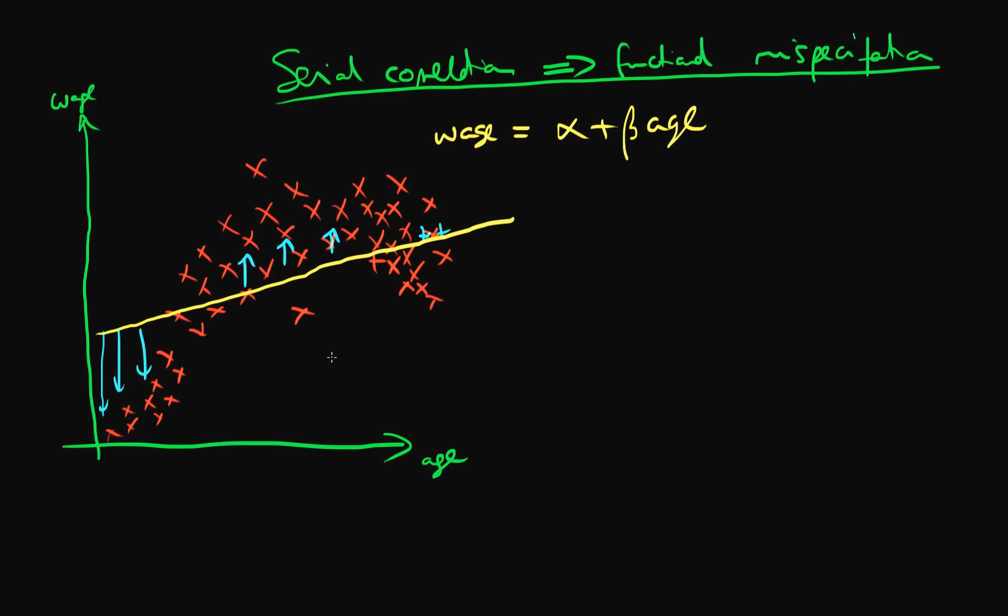So note this is evidence of serial correlation because if I have a given positive error in my model, then for an error in the point next to it, for one more age, I'm also likely to make a positive error. So this is an example of serial correlation.